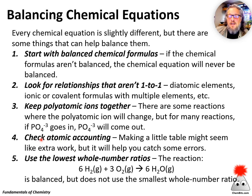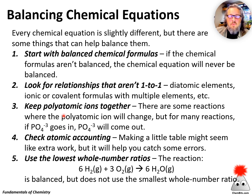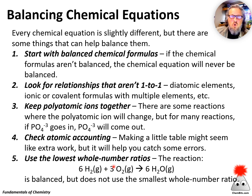Always check that atomic accounting. It may seem like a little extra work to put that table together, but having that little table is really helpful to think through the process and definitely helps catch errors in balancing as you move forward. The other thing is we should always try to use the lowest whole number ratio. Looking at the same reaction, if the atomic accounting is balanced with 6 H₂, 3 O₂, and 6 H₂O, those aren't the smallest whole numbers — we saw that 2, 1, and 2 balance this equation. So in almost all situations, use the lowest whole number ratios to get the balanced equation.